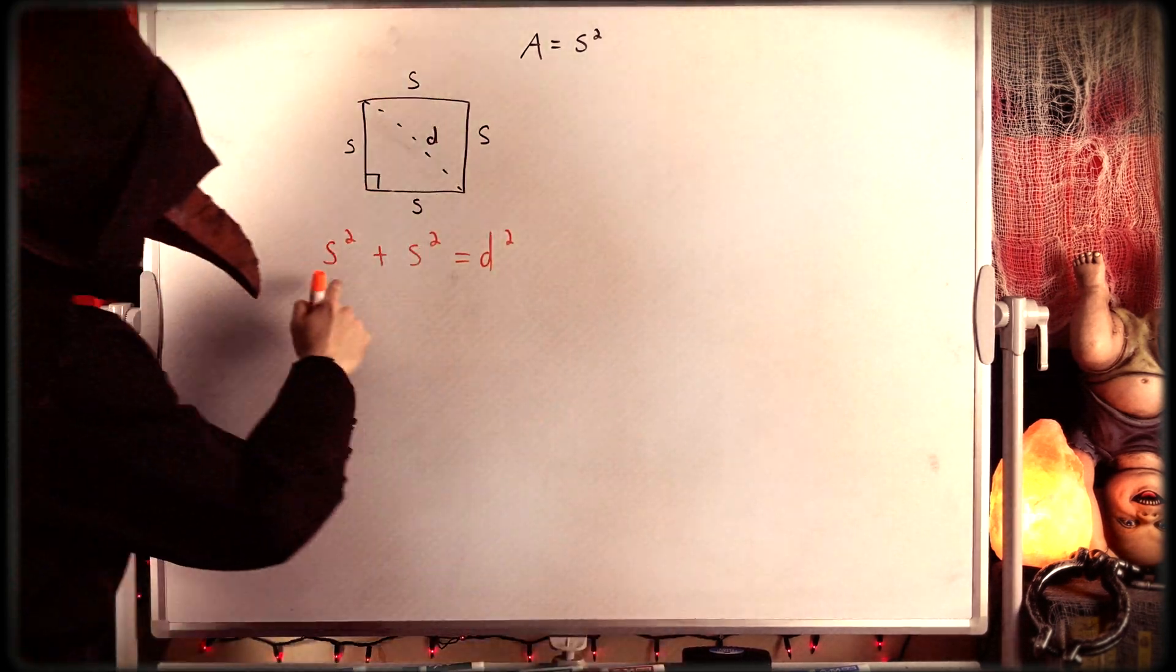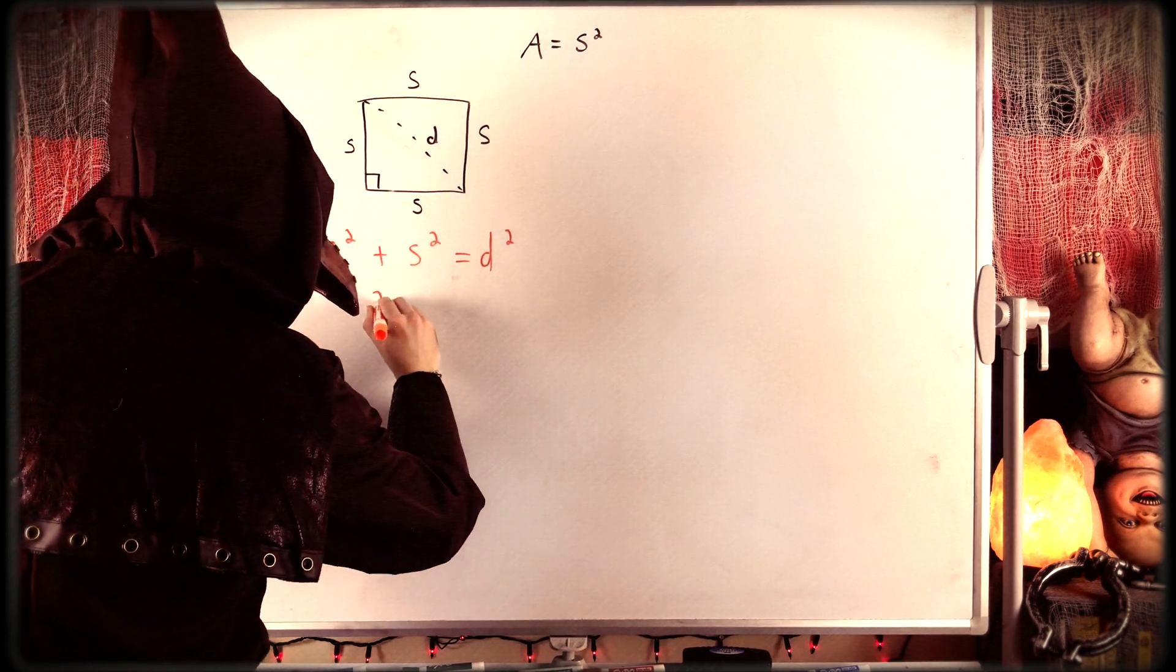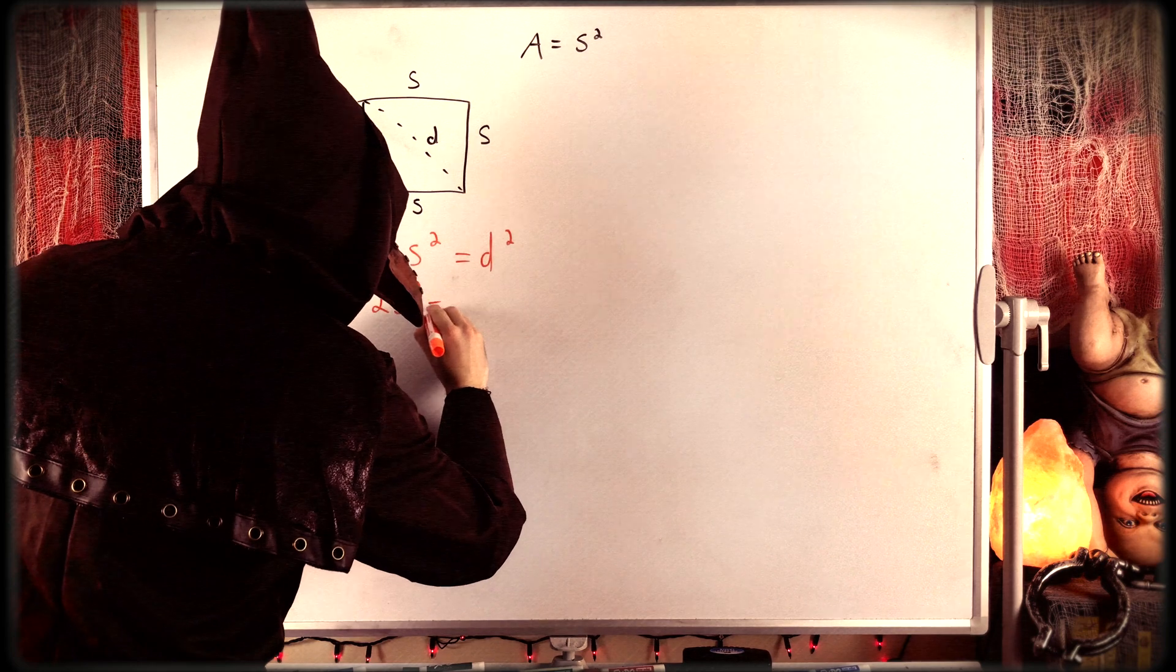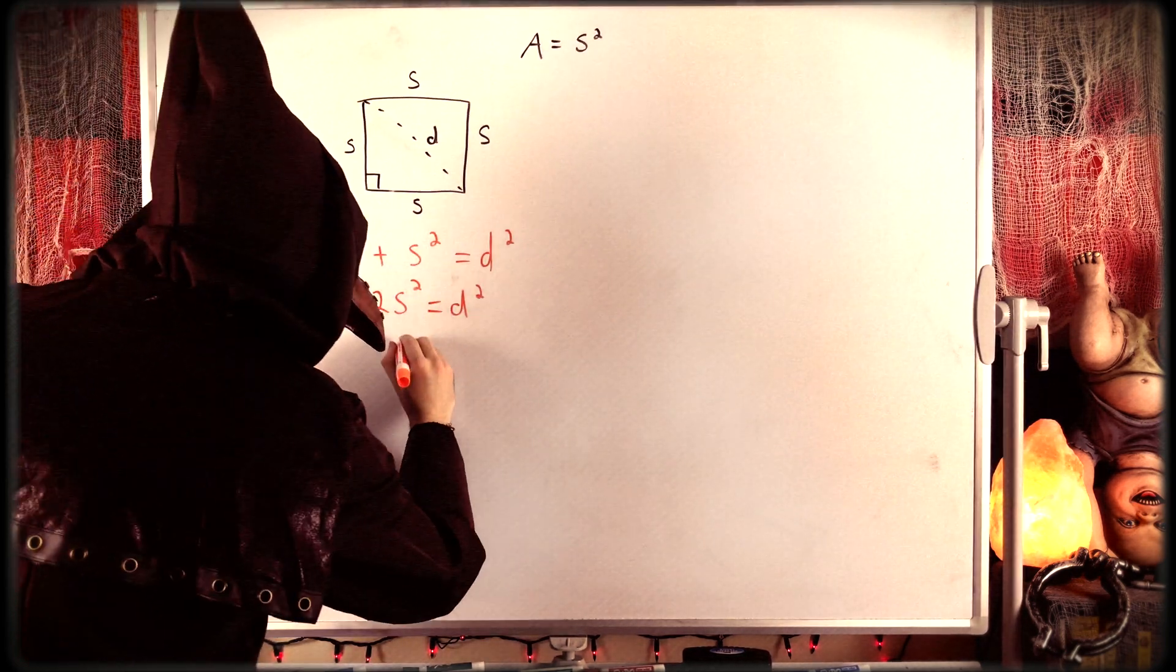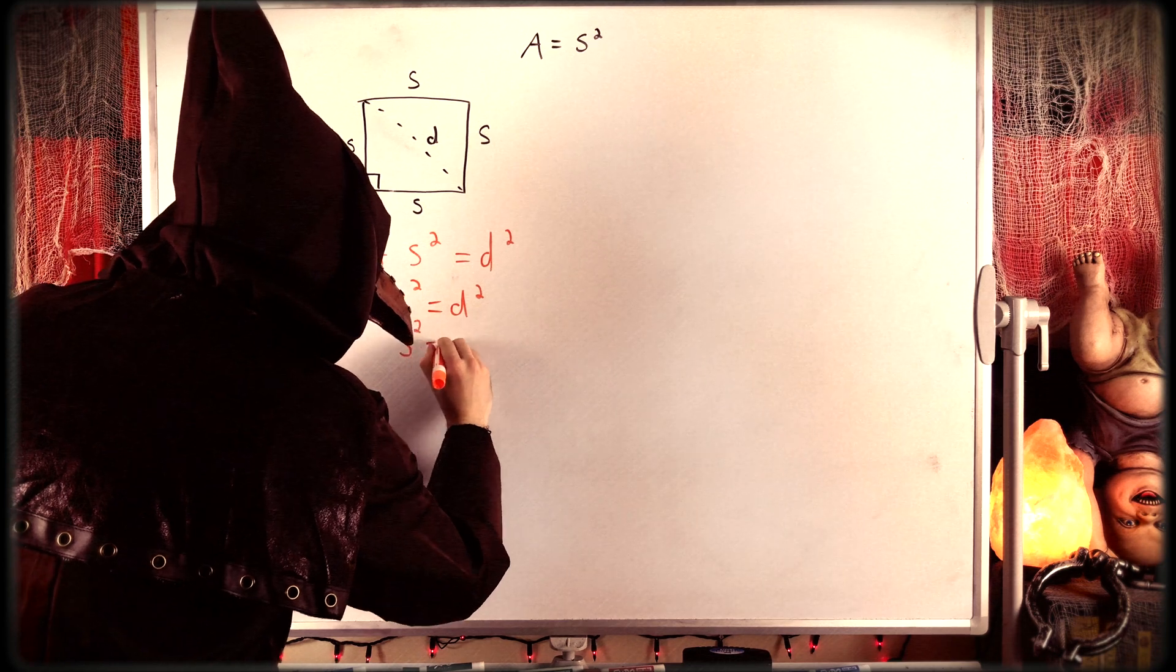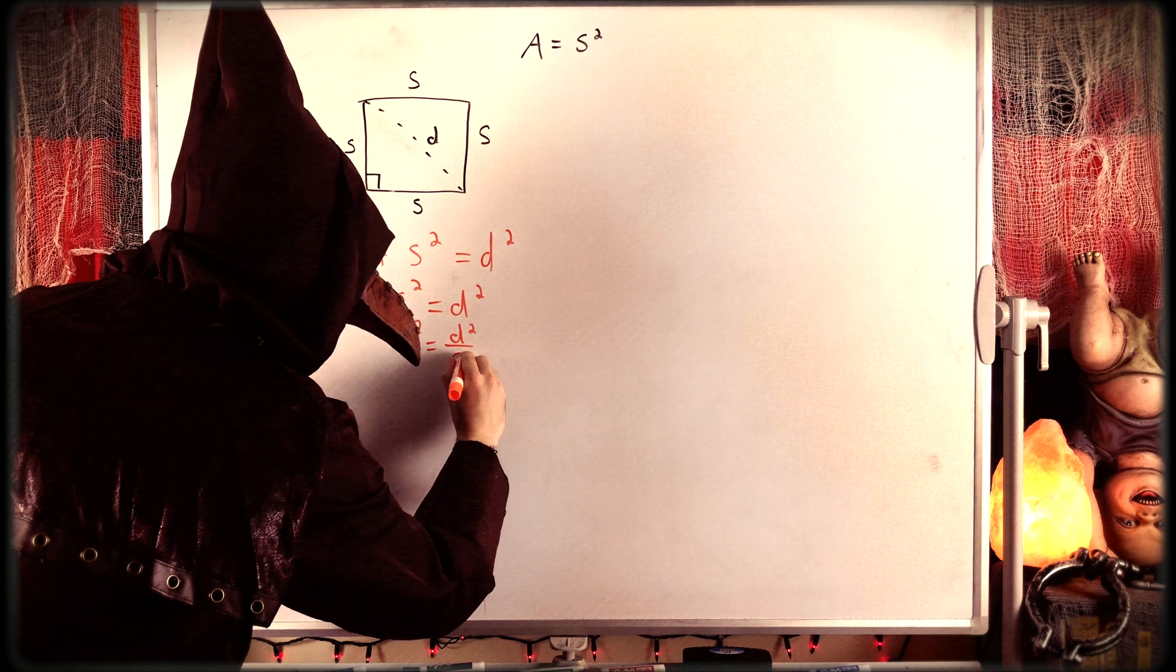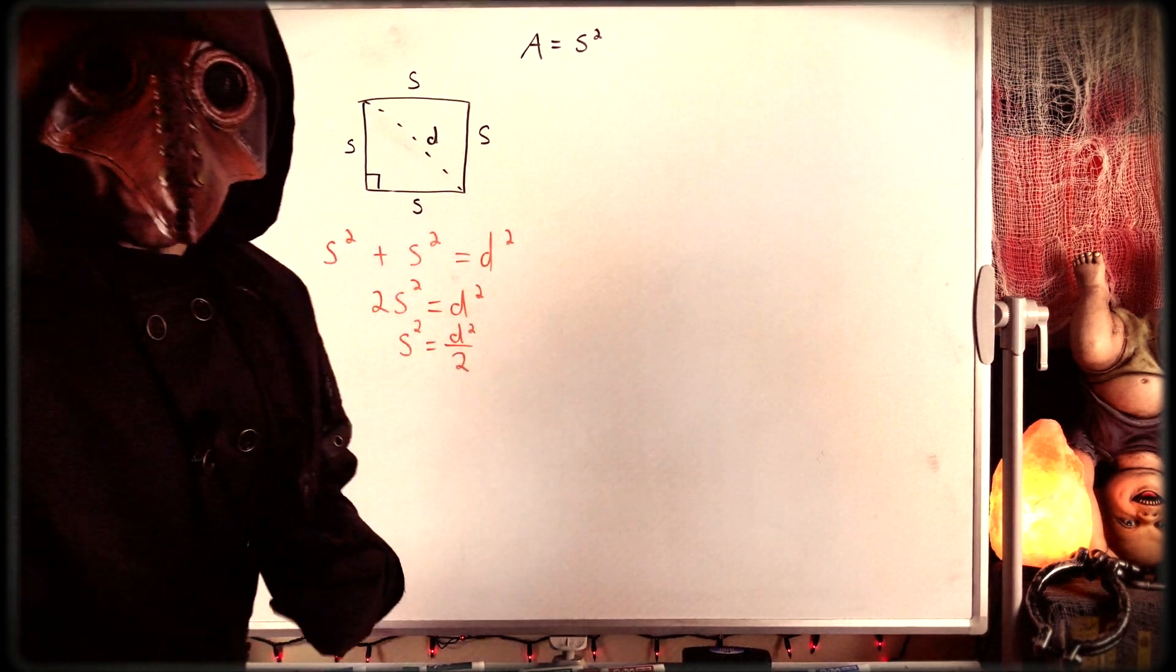Now S squared and S squared, those are like terms, so we can combine those and rewrite the equation as 2S squared equals D squared. Then we might divide both sides of the equation by 2 to give us that S squared is equal to the diagonal squared over 2. Again, that's just dividing both sides of that equation by 2.